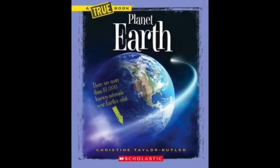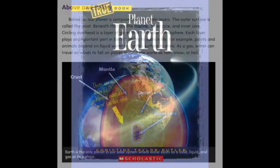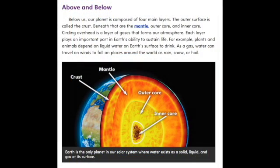Planet Earth by Christine Taylor Butler. Above and Below — below us, our planet is composed of four main layers.